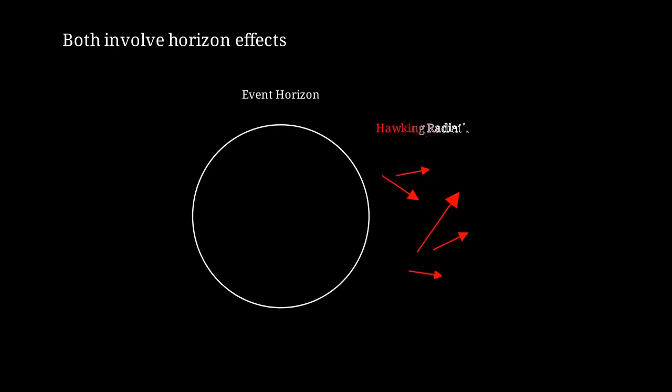Near the event horizon, quantum fluctuations can be separated. One member of a virtual pair falls into the black hole, while the other escapes as real Hawking radiation. The energy comes from the gravitational field of the black hole.